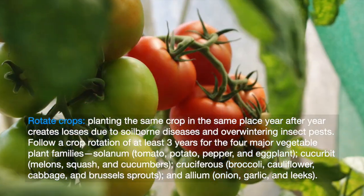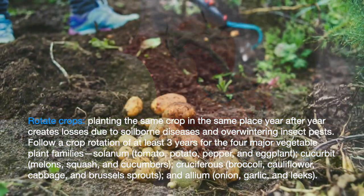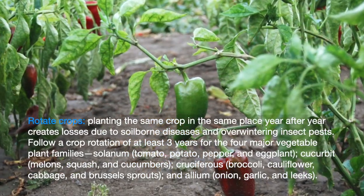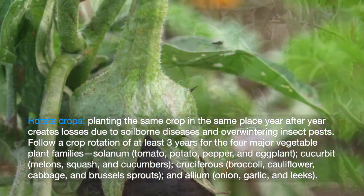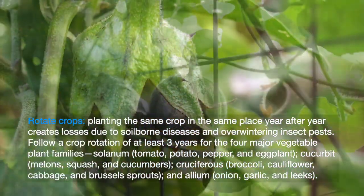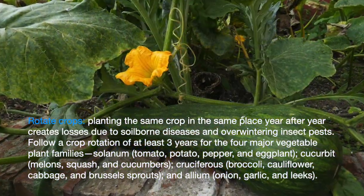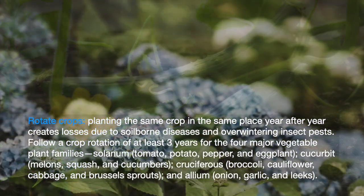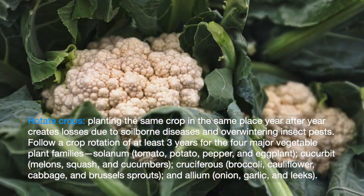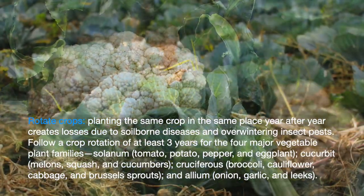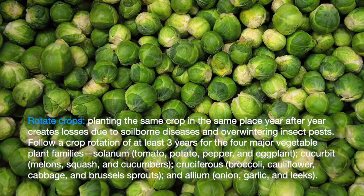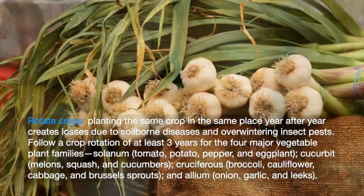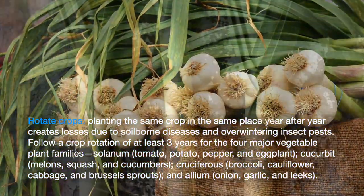The four major vegetable families are: Solanum — tomato, potato, pepper and eggplant; cucurbit — melons, squash and cucumbers; cruciferous — broccoli, cauliflower, cabbage and Brussels sprouts; and allium — onion, garlic and leeks.